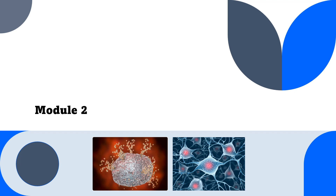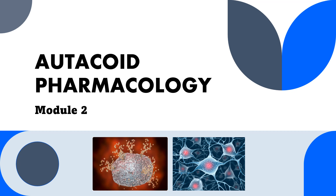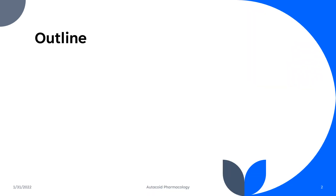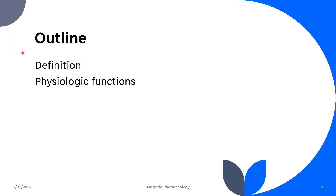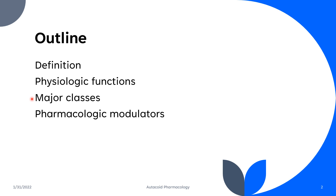Welcome to module 2 of this course. Module 2 will talk about autacoid pharmacology. For the outline of this presentation, the first part will be the definition of autacoids. It will also deal with the physiological functions, the major classes of autacoids, and the pharmacological modulators of autacoids.